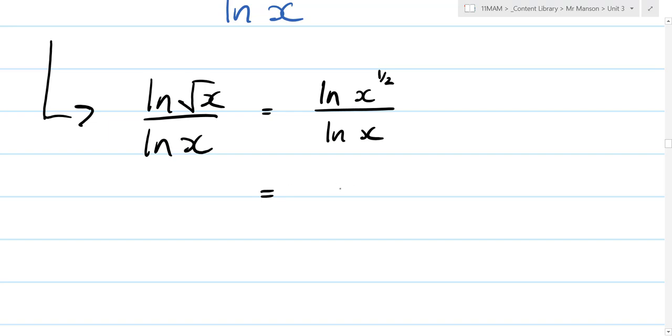If we subtract logs, then we divide inside. So it's easy to figure that that's suggesting you subtract root x minus x. Not the case in this case, but how do I simplify the numerator? We've got that rule that brings the power out the front. So we get a half log x over log x. And what happens now? Log x and log x cancel out. We're left with a half. It doesn't matter what x is, this will all work out.